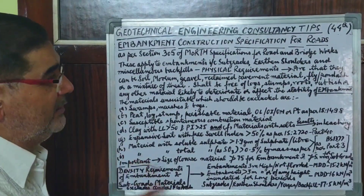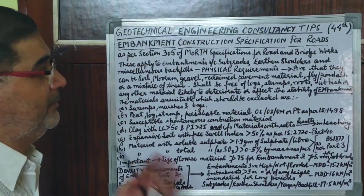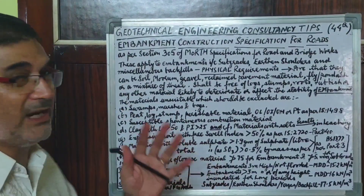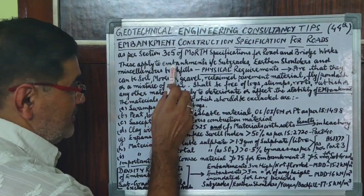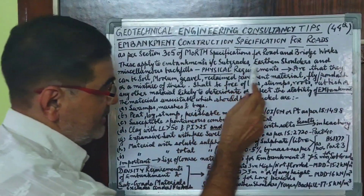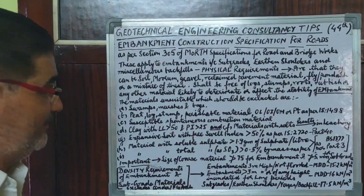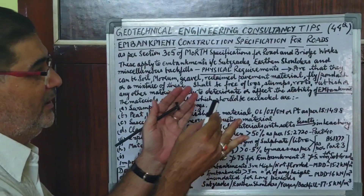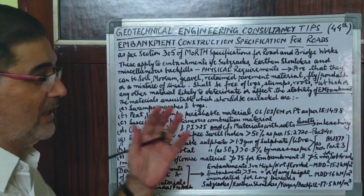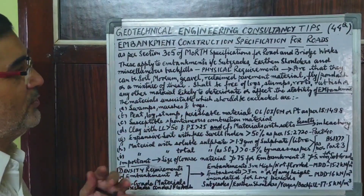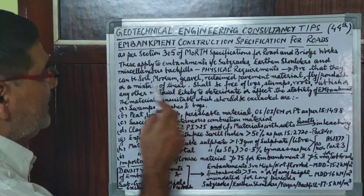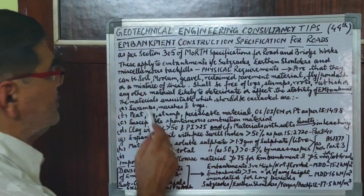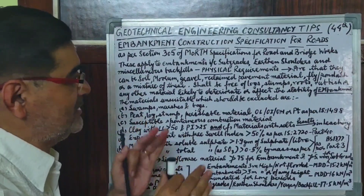Whenever we have to construct a road, we prepare its subgrade, subbase, embankment, etc. In this lecture, I will be covering the construction of embankments, which may include subgrades, earthen shoulders, and miscellaneous backfill as per this clause. The physical requirements of the constituent material are that they can be soil, mooram, gravel, any reclaimed pavement material, fly ash, or pond ash, or a mixture of these, or as decided by the concerned engineer in charge.